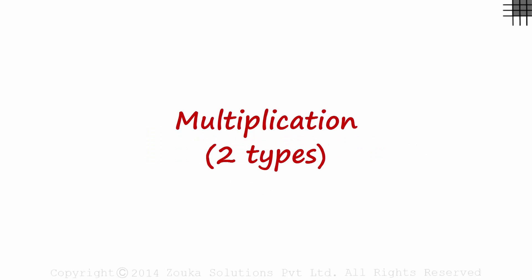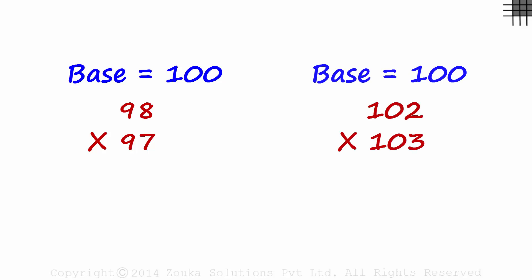We have covered two types of multiplication problems so far. First, problems like 98 times 97 when both numbers were below the base. And second, problems like 102 times 103 when both numbers were above the base.